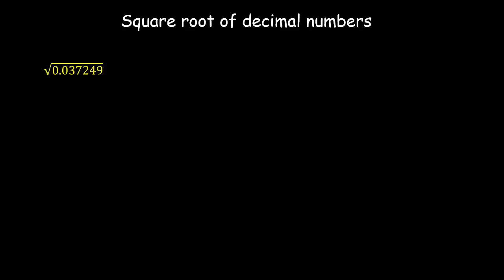We'll start by taking one decimal number which is 0.037249. Interestingly, there is a way where we do not need to do any modification and we can just find the square root by doing long division like how we used to do for non-decimal numbers, that is for integers. So for that we somehow need to convert this into an integral form. We need an integer, right?